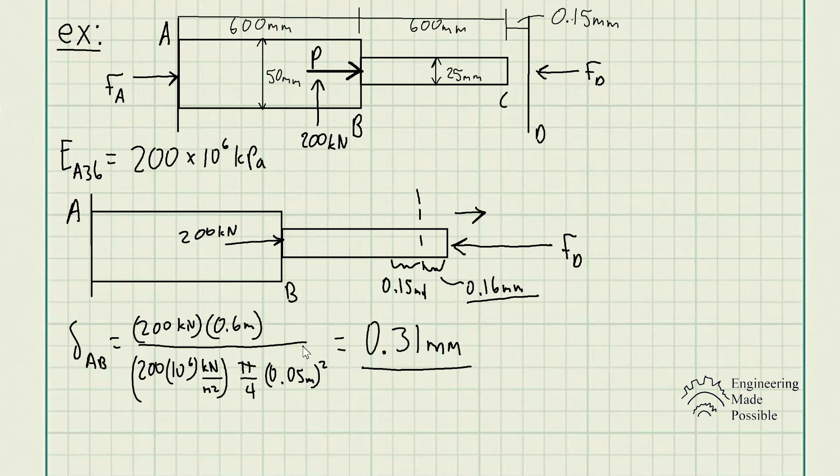This is the method in solving these reactions when it comes to these constraints. You first initially remove this wall and just see how much the assembly would deform on its own. And then how much force it would take to deform it back to where that wall originally was. That's how you would solve for the reactionary forces of this system.